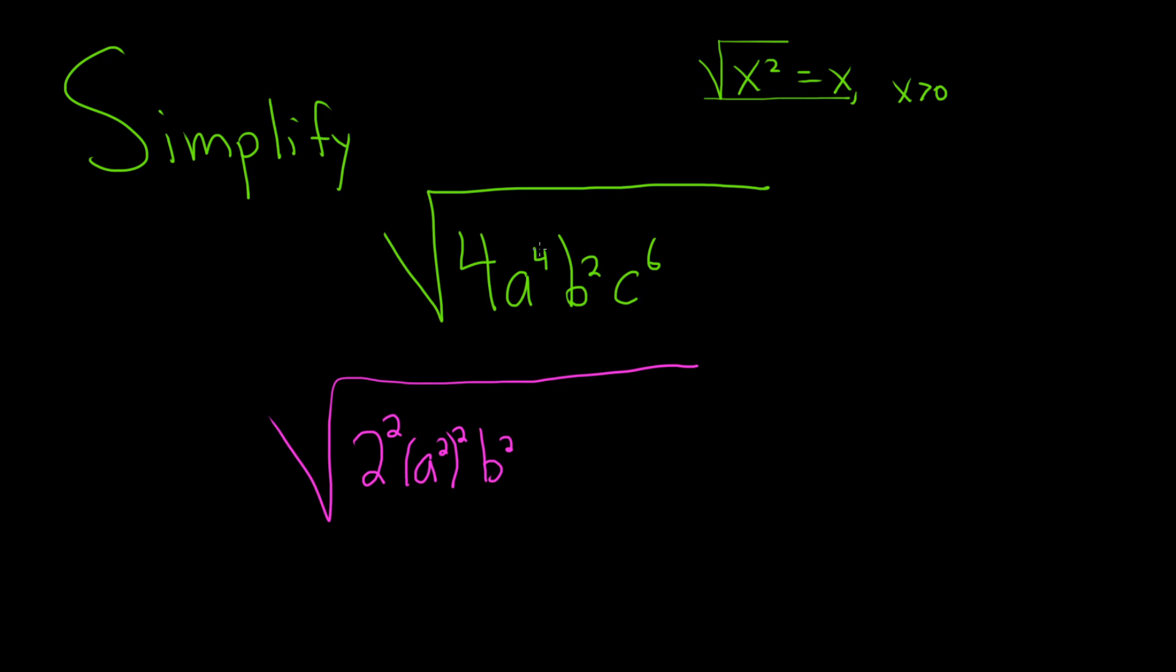The c, we know that 3 times 2 is 6. So we can write this as c cubed squared. That should check, because 2 times 3 is equal to 6.